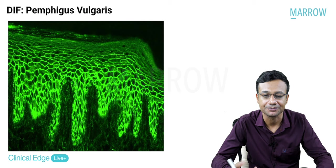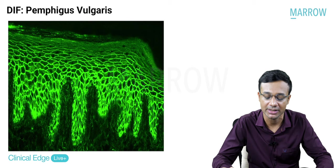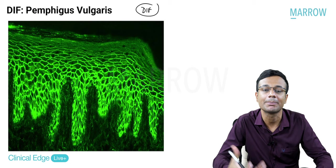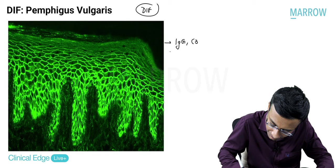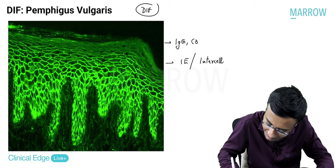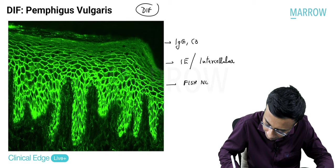The investigation of choice in any autoimmune blistering disorder is direct immunofluorescence, by which you can visualize the pathogenic autoantibodies and their deposition pattern. In pemphigus vulgaris, IgG and C3 are deposited intraepidermally in an intercellular pattern, called the fishnet pattern - very classical for pemphigus vulgaris.